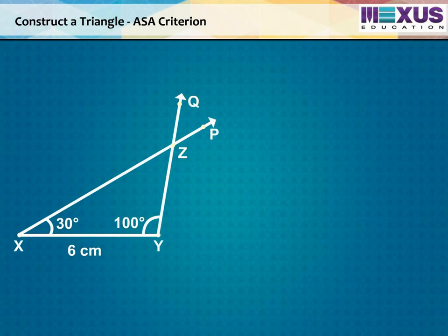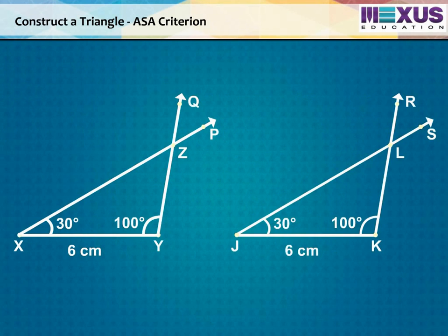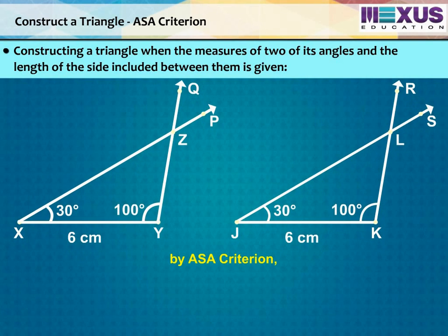Now, if we construct a triangle JKL with the same parameters as triangle XYZ, then by ASA criterion, we can say that triangle XYZ is congruent to triangle JKL.